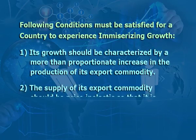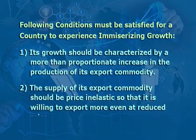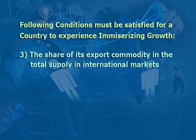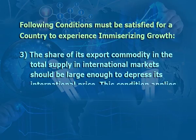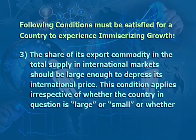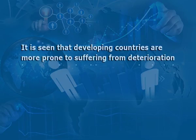Number two: the supply of its export commodity should be price inelastic, so that it is willing to export more even at a reduced price. Number three: the share of its export commodity in the total supply in international markets should be large enough to depress its international price. This condition applies irrespective of whether the country in question is large or small, or whether it is rich or poor.